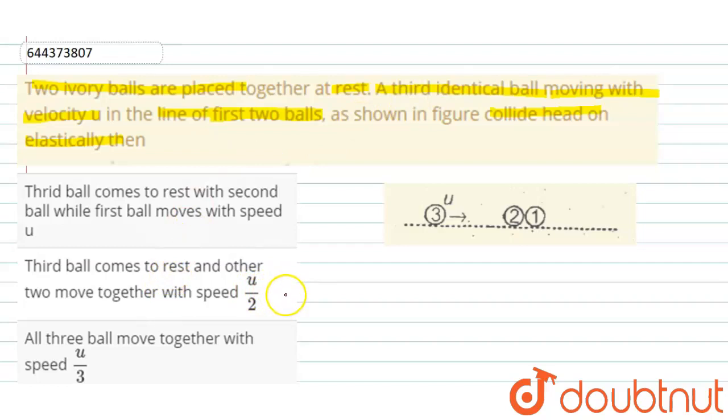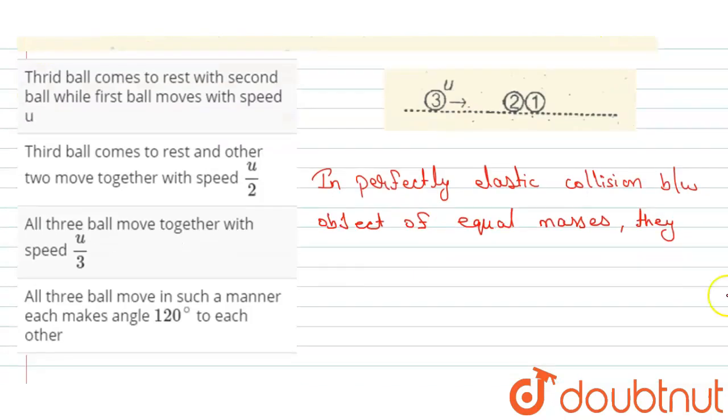So in perfectly elastic collision between objects of two equal masses, they exchange their velocities. In perfectly elastic collision between objects of equal masses, they exchange their velocities.